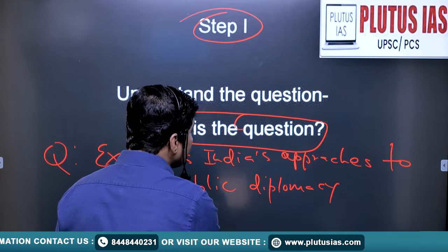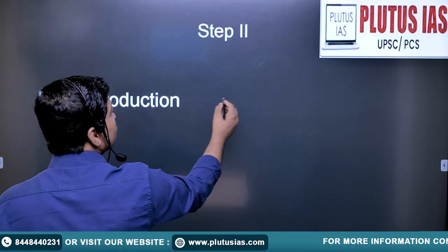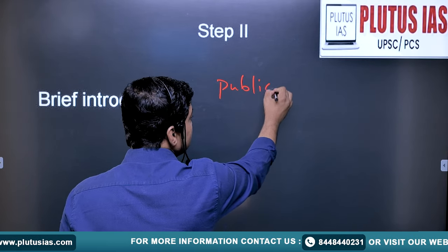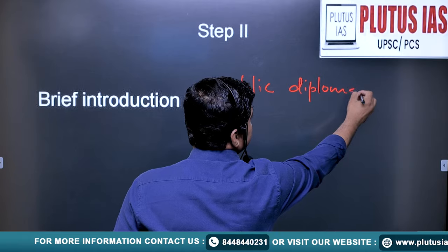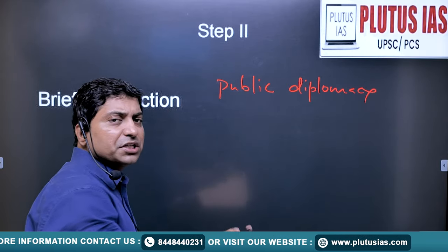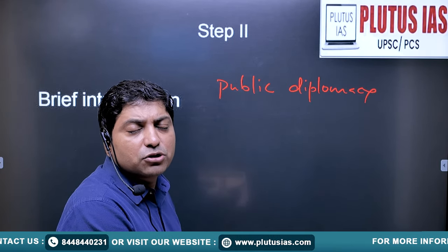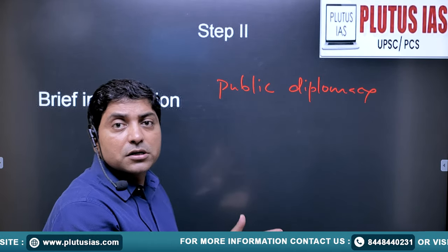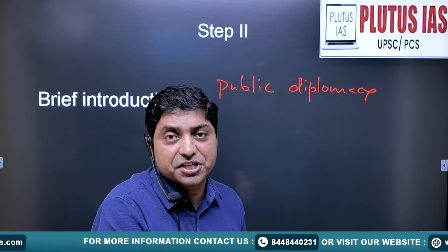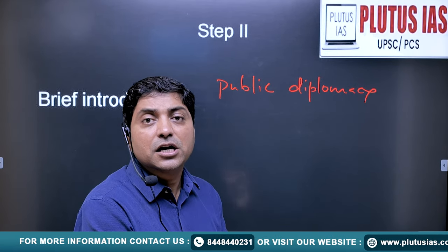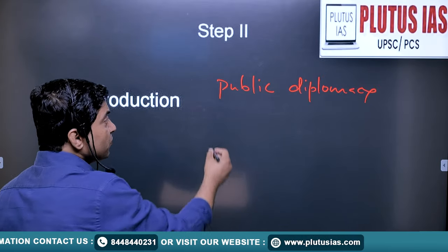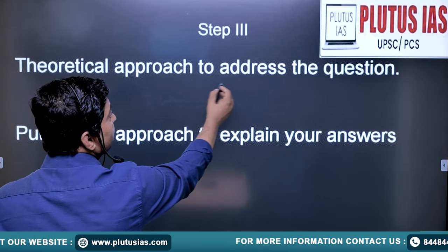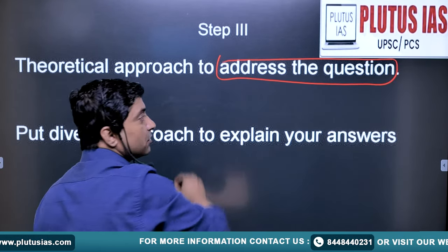Then second, if you just give a brief introduction — the first is you have to give a brief introduction. Here you need to talk about what is public diplomacy in two or three lines, not more than that. You can cite any scholar like Rajiv Bhatia or Ian Hall, or as Jaishankar said, soft power is a society-driven approach — public diplomacy is society-driven. So after the brief introduction, you come to address the question. That is the third step.